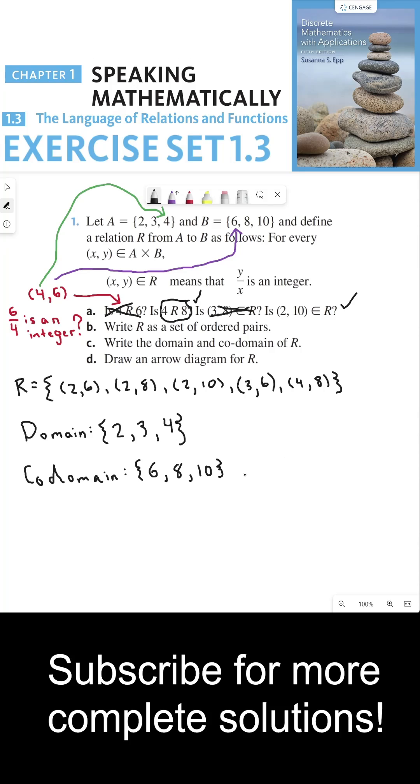Now we have to draw an arrow diagram for R. So here I drew out A and B, and so now I have to draw arrows from my domain to my codomain. 2 is related to 6. 2 is related to 8. And 2 is related to 10. 3 is related to 6. 4 is related to 8. This is what the arrow diagram for my relation R would look like.